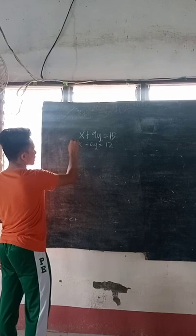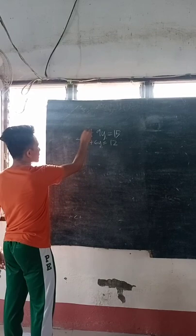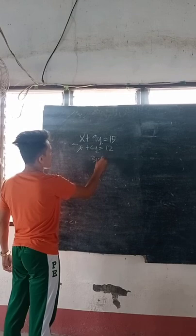x minus x is cancelled, so x is eliminated. Then 9 minus 6 is 3, so we get 3y is equal to 15 minus 12, which is 3.